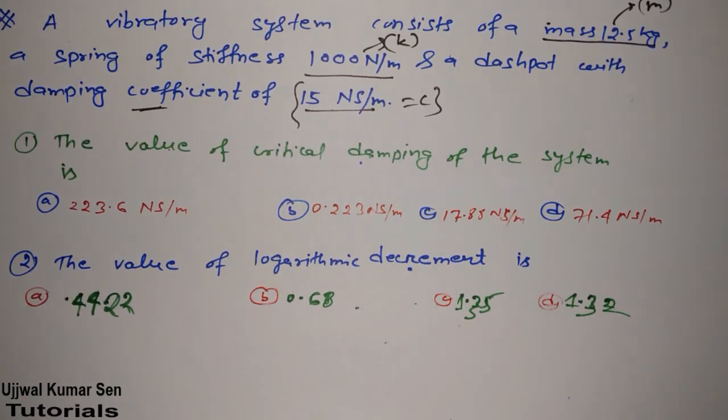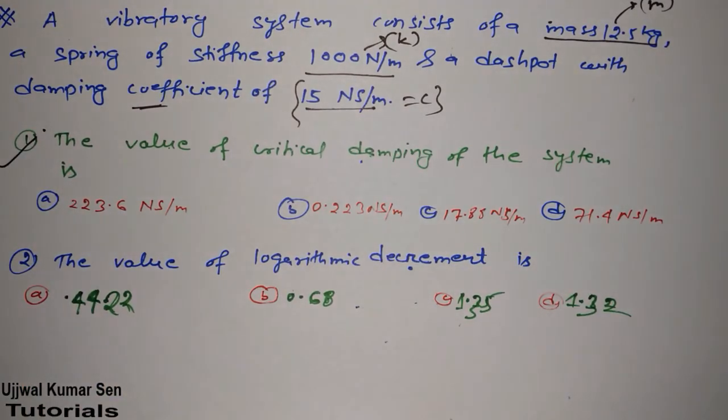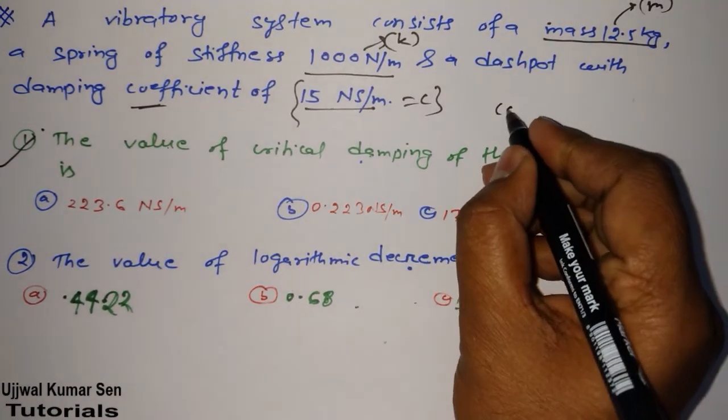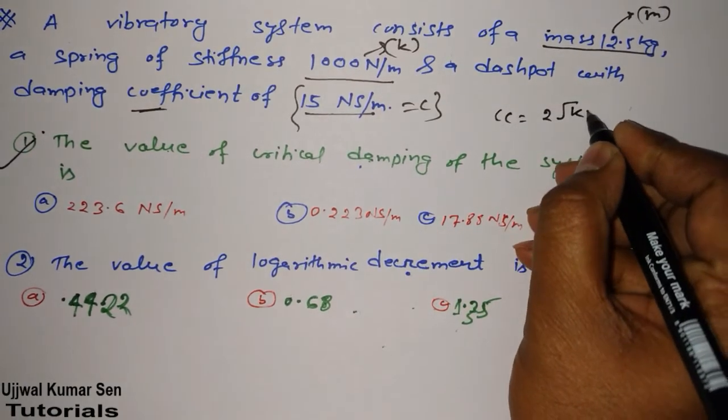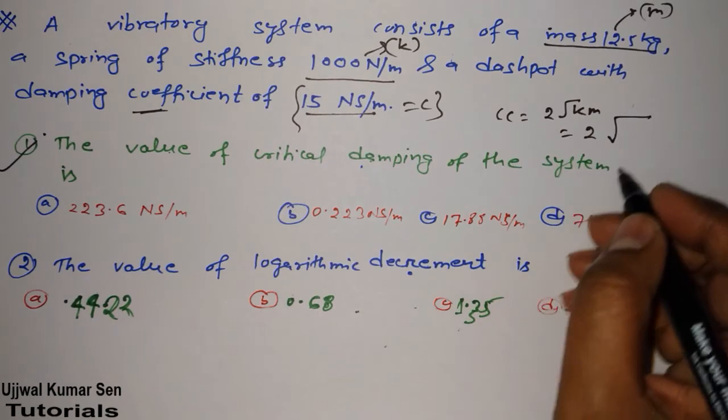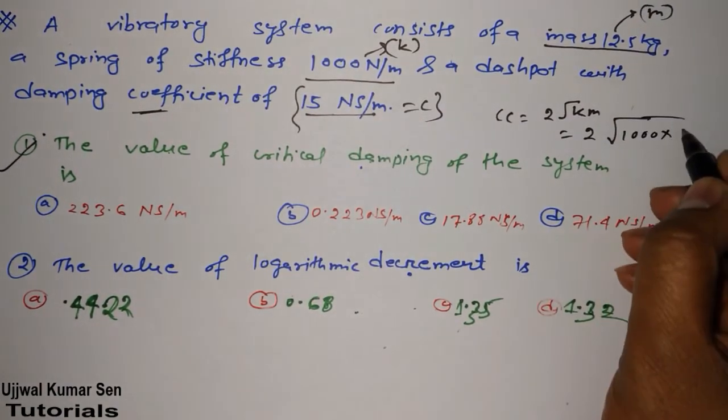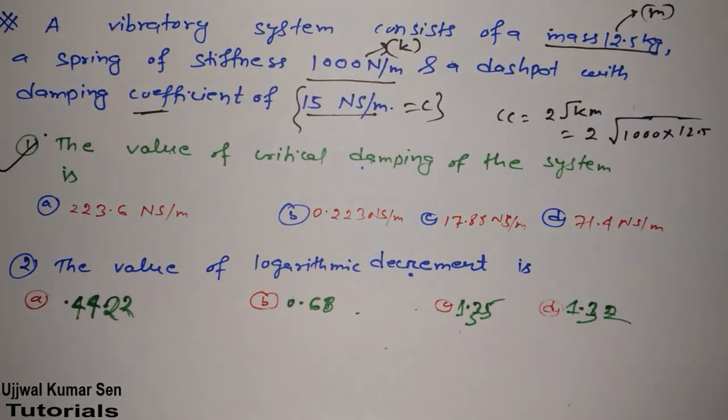So in this question, first question, let's go for the first question. First question states the value of critical damping of the system is. Suppose that there is a system, in this system, what is the value of critical damping? We have to find out that. So we know that critical damping is equal to 2√Km. So 2√Km, right? So K is what? Stiffness, 1000, M is 12.5. Well, before going to solve this equation, I have to check out units.